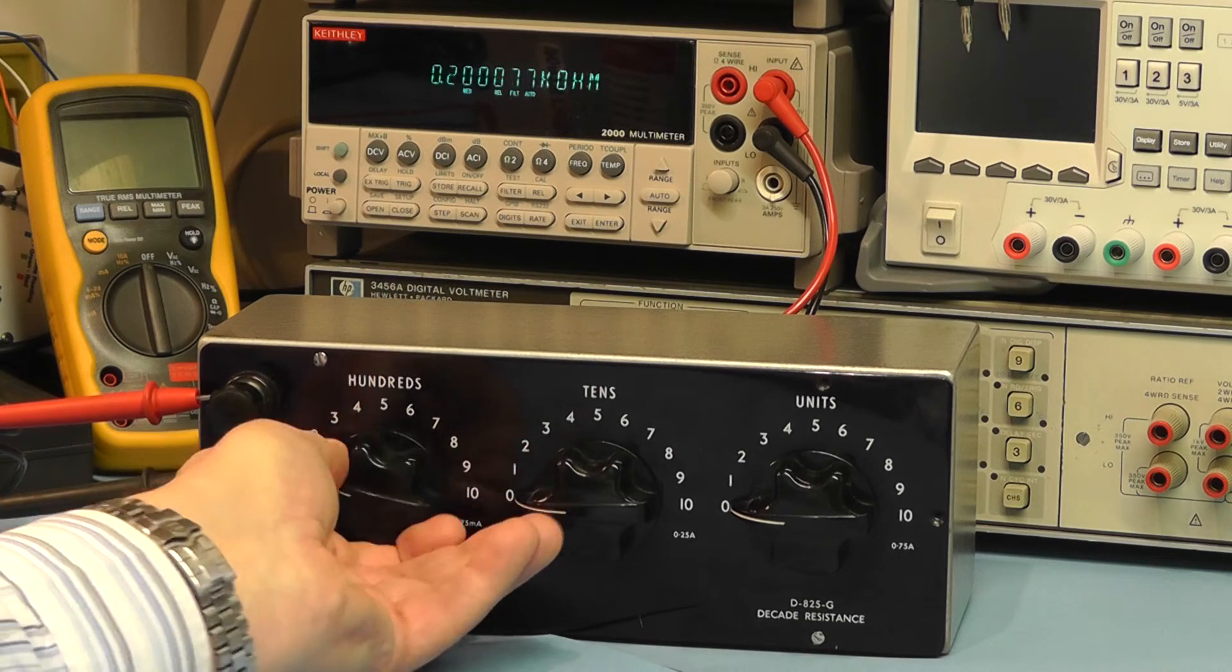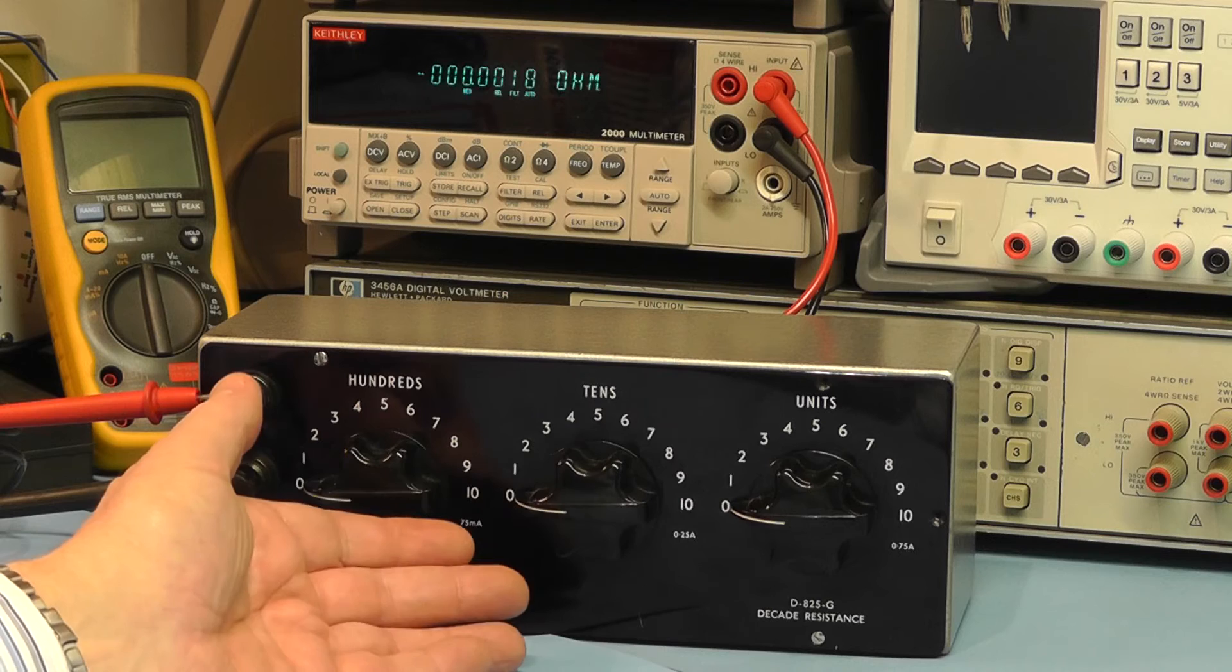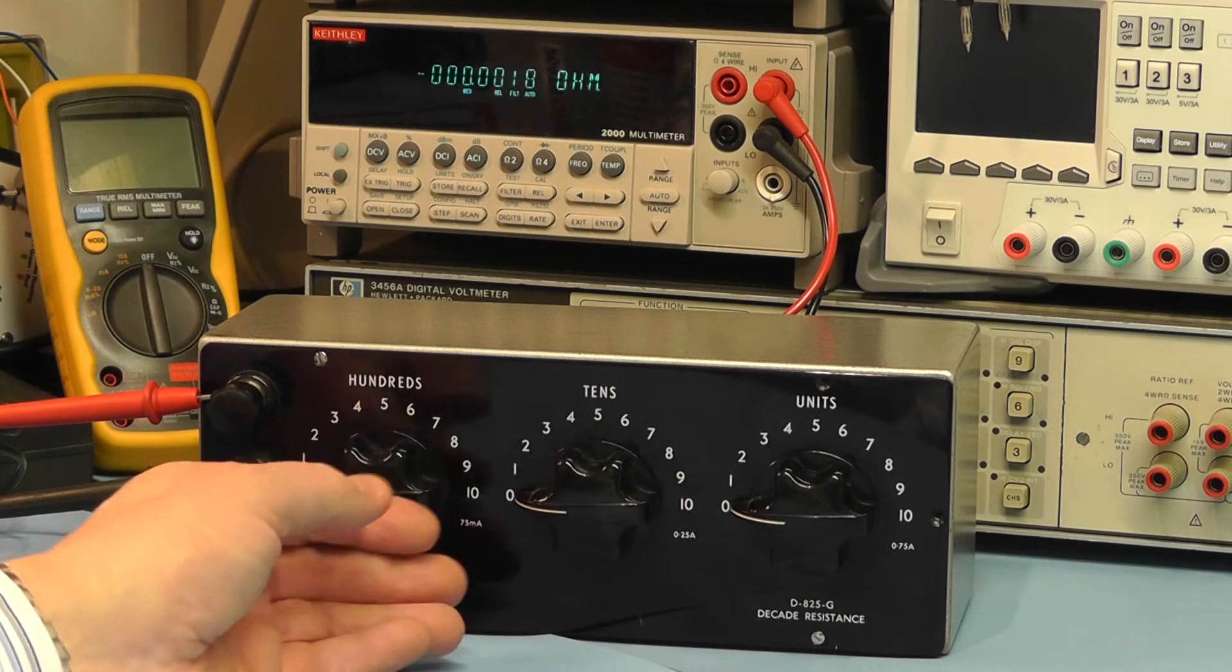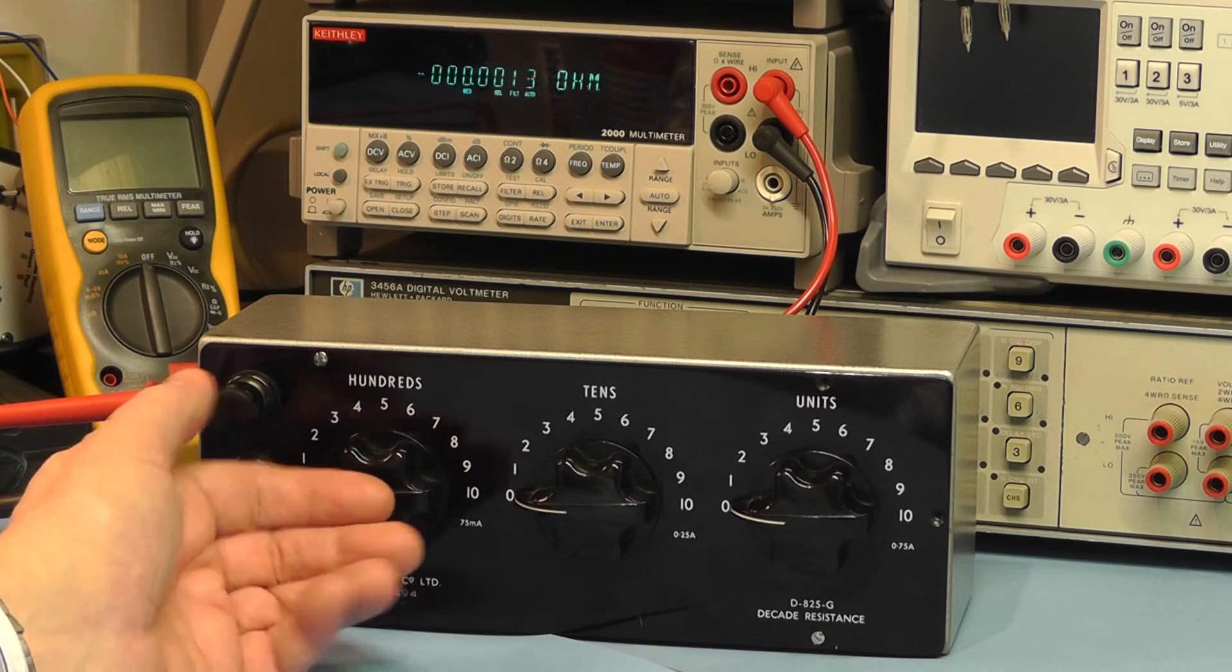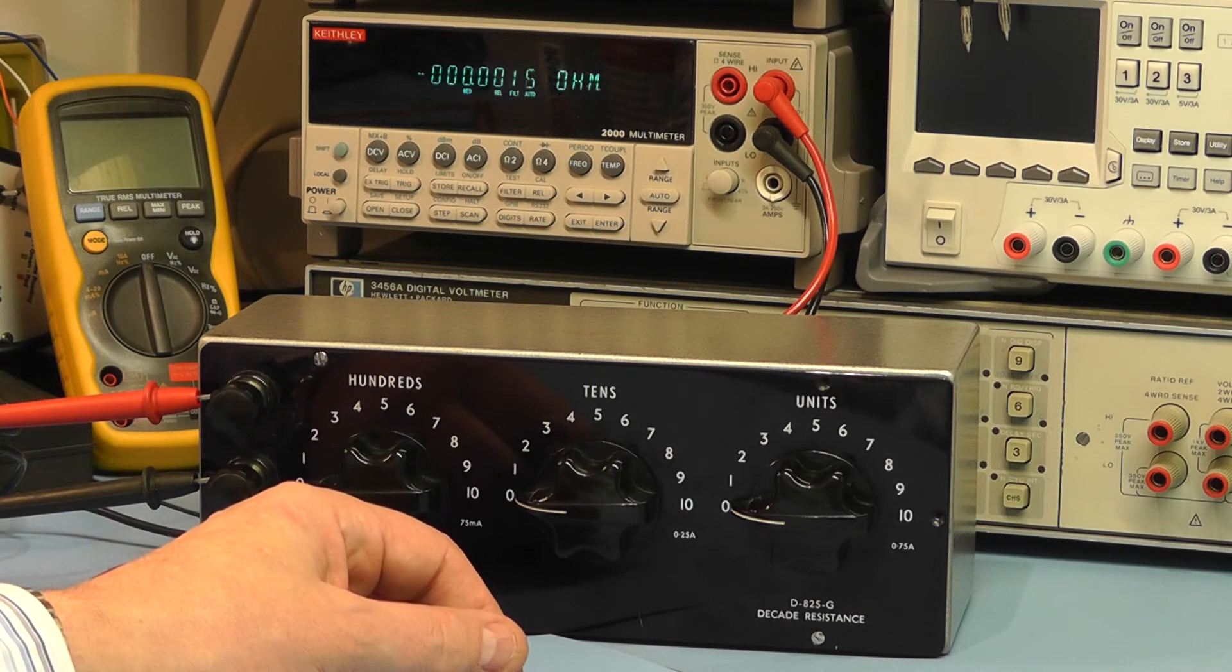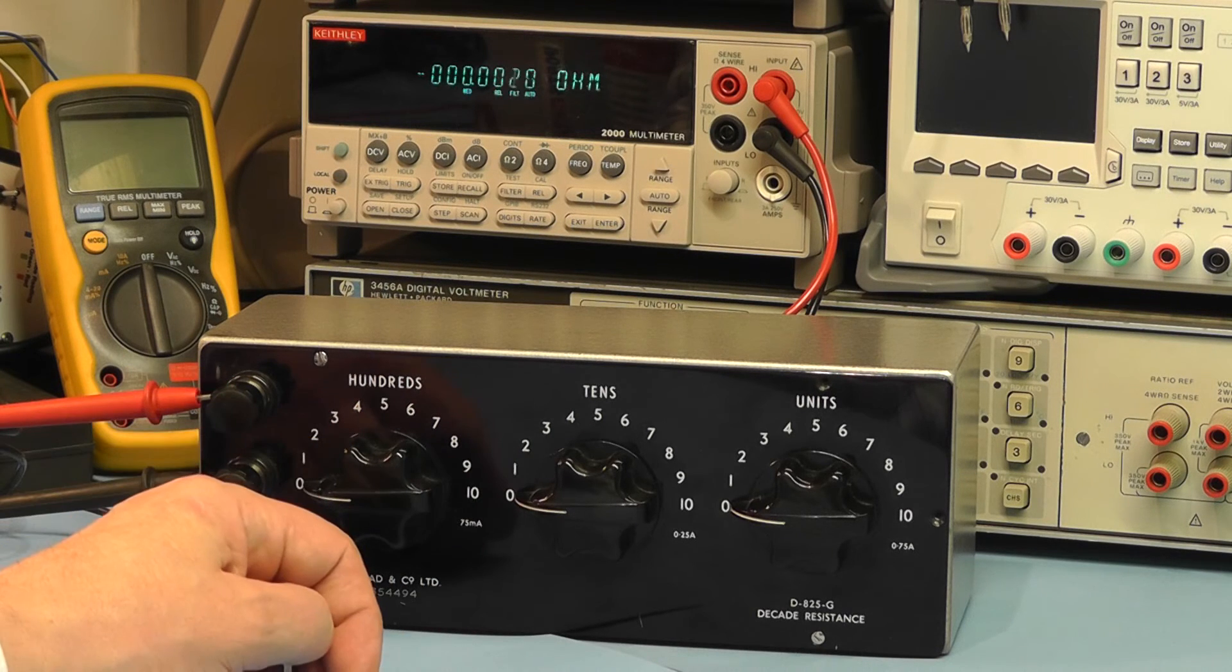So it seems to be still fairly accurate, the meter certainly within its tolerance that when it was produced. I think it was guaranteed to have a tolerance of 0.1 percent but I think it's a little bit better than that. And to say it's 70 years old it's still a reasonably accurate piece of test equipment that you can use today.